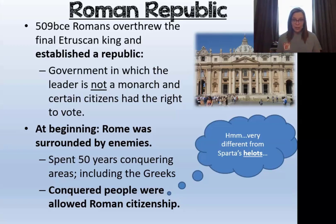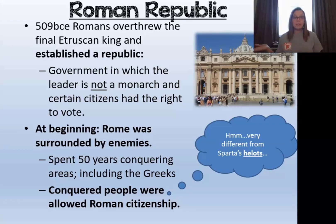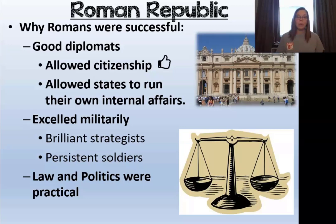In the beginning Rome was surrounded by enemies, so they spent a lot of time conquering different territories. This included conquering the Greeks. Whenever the Romans would conquer a group of people, they would actually allow those people to assimilate into their society — they would give the conquered people the right to become Roman citizens. This is very different from Spartan helots. The Spartans also conquered many people, but didn't give them the same rights as citizens — they became slaves. So this shows that the Romans were pretty smart when it came to politics.